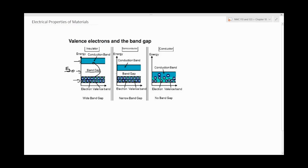Semiconductors have a small band gap, and electrons can actually be excited with sufficient energy to reach the conduction band and conduct electricity, but this requires some activation energy. So it's possible for semiconductors to conduct electricity because electrons can jump from the valence band through the band gap to the conduction band. Conductors are the least resistant because the conduction band is within close proximity to the valence band, so there isn't any band energy required for conduction to take place.